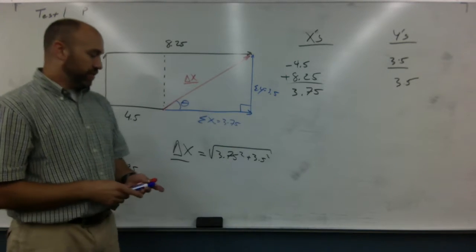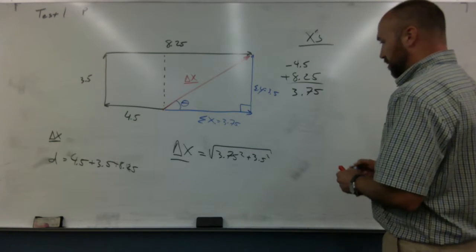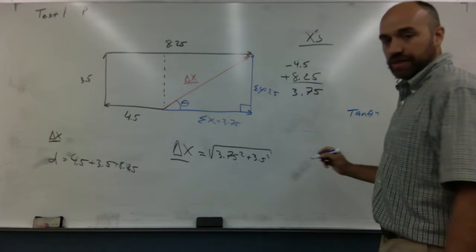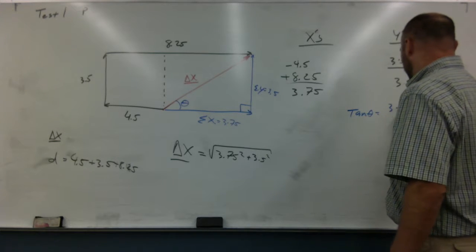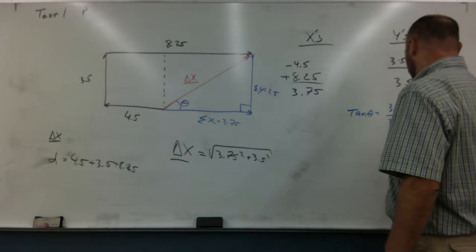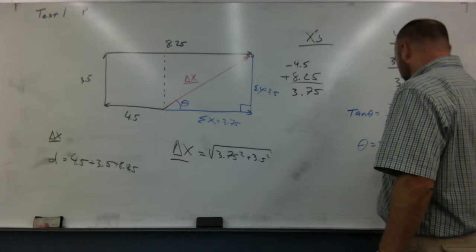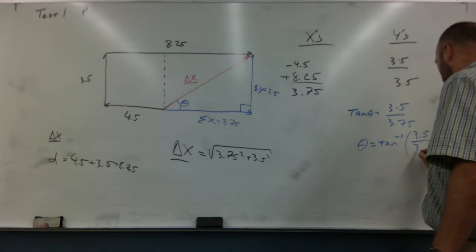So to get theta, I'm going to say tangent of theta is opposite over adjacent, so it's going to be 3.5 over 3.75. So then theta is equal to the arc tangent of 3.5 over 3.75.